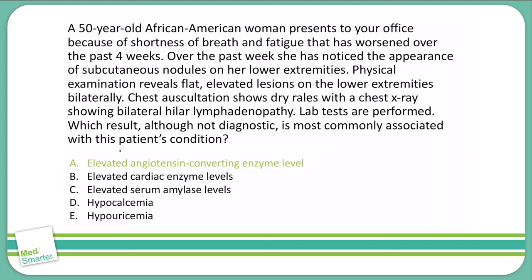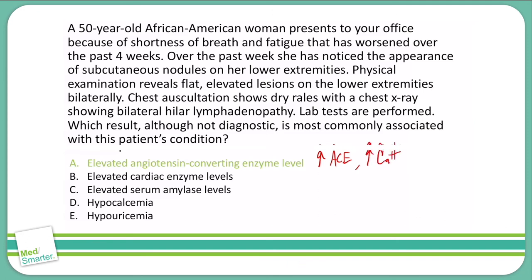A is the correct answer, as angiotensin-converting enzyme levels are elevated in sarcoidosis, which is what this question is referring to. Sarcoidosis mostly involves the skin and the lungs, though there are some other potential involvements as well. With sarcoidosis, we will have an increase in ACE levels, an increase in calcium levels — hypercalcemia — and we can see an increase in CD4 and CD8 levels in the bronchoalveolar lavage.